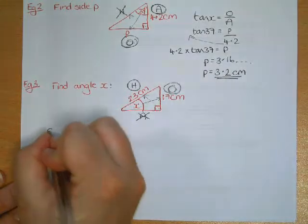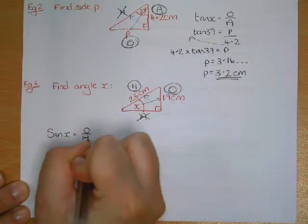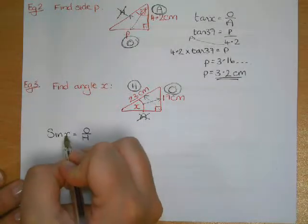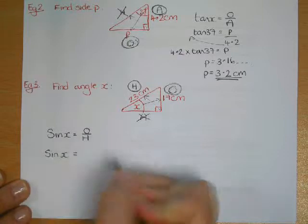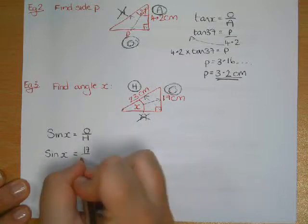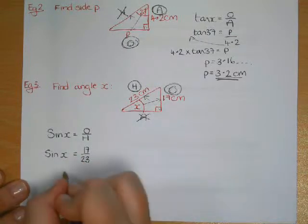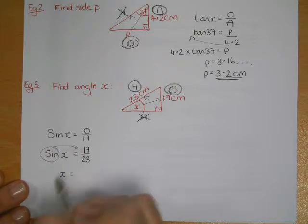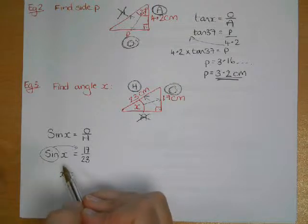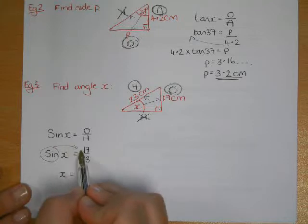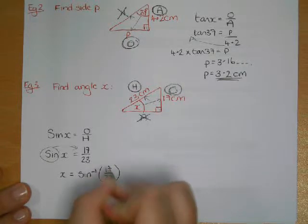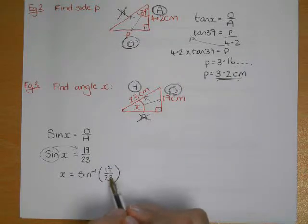We write sine x equals O over H, then substitute in the values. X is the angle we're trying to find so we leave it as sine x. O is 17 and H is 23. To get x on its own, we need to move the sine to the other side. Just like multiply and divide, sine has an opposite operation called sine⁻¹. So we do sine⁻¹ of 17 over 23. It's more accurate to leave it as a fraction rather than rounding the decimal.